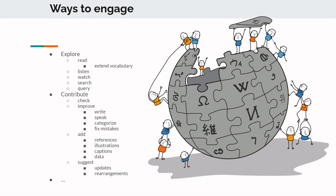You can just try to check the content that's already there and then try to improve it, which is a very active involvement of your linguistic knowledge and can be combined with your other kinds of knowledge. You can write, speak, categorize, fix mistakes, add references, add illustrations, translate illustrations, add captions, add data, suggest updates or rearrangements, or engage in discussion — each of these wiki pages has a discussion page.